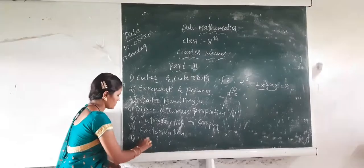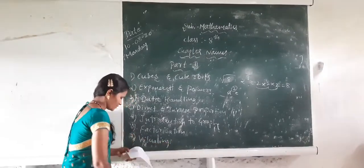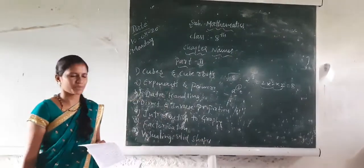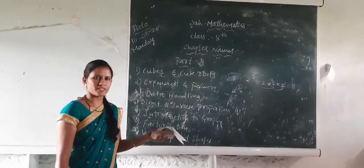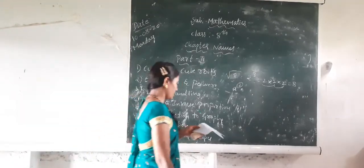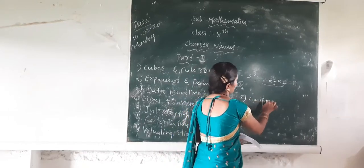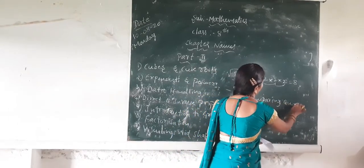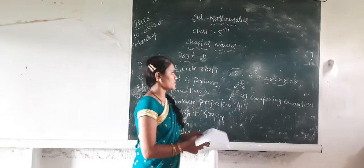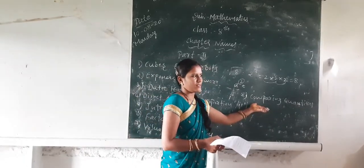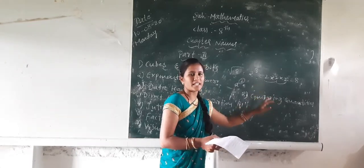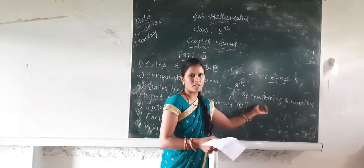The seventh chapter is Visualizing Solid Shapes. You know what a solid shape is — in Class 7 you studied the shapes, but here they are given for calculations. The eighth chapter is Comparing Quantities. In Class 7 you studied quantities with directly given values, but here you are doing comparison and compilation.